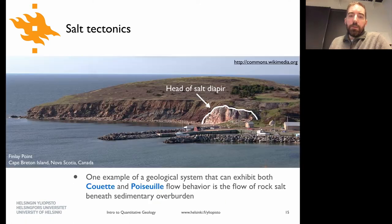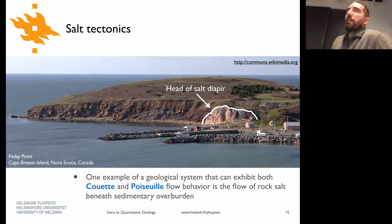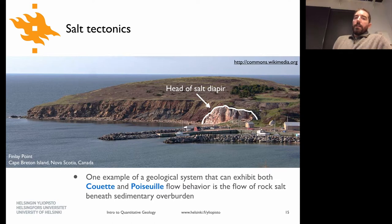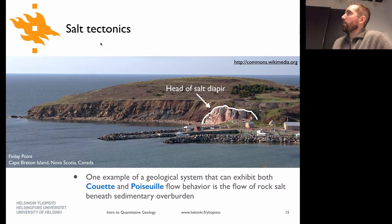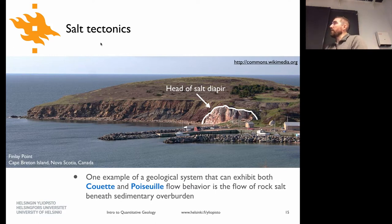There's a nice geological example involving both Couette and Poiseuille flow: salt tectonics. This is basically deformation of the Earth in regions where there are layers of salt. In places where people are interested in getting oil and gas out of the ground, there are often these layers of salt. Salt has a relatively low viscosity compared to most other geological materials, so it tends to flow.